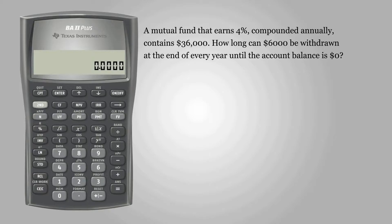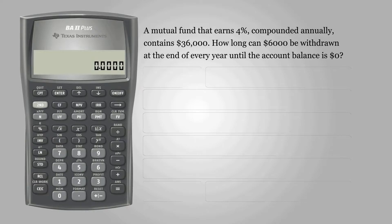The question asks: a mutual fund that earns 4% compounded annually contains $36,000. How long can $6,000 be withdrawn at the end of every year until the account balance is zero?